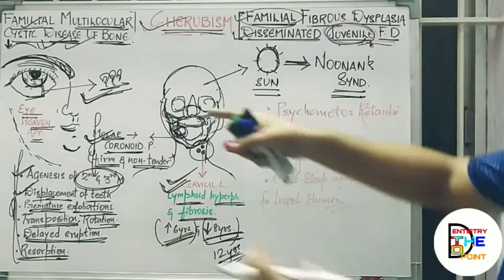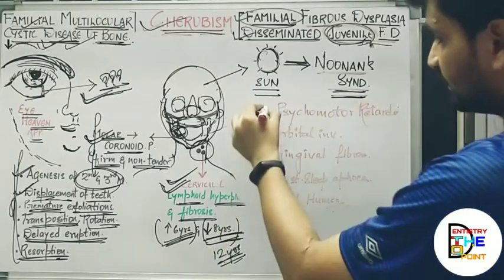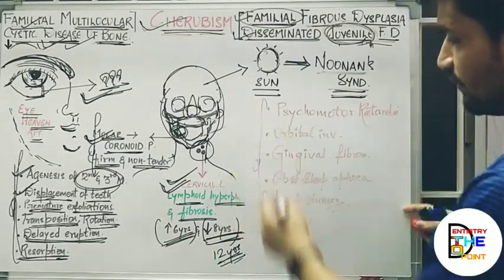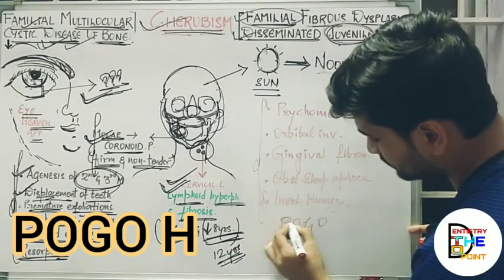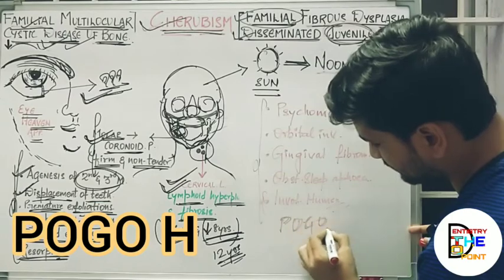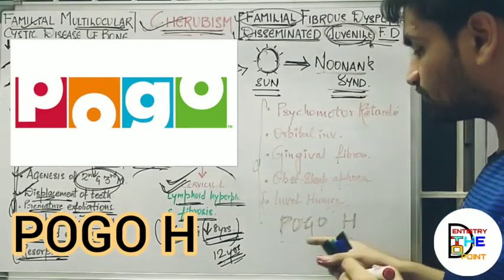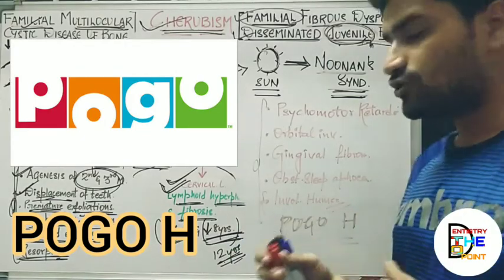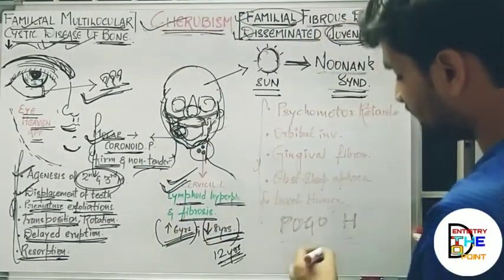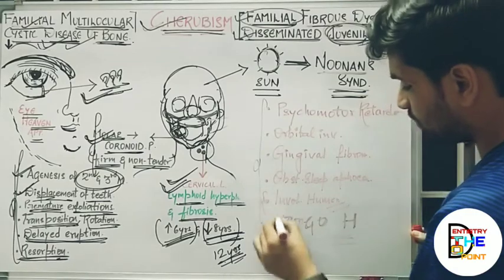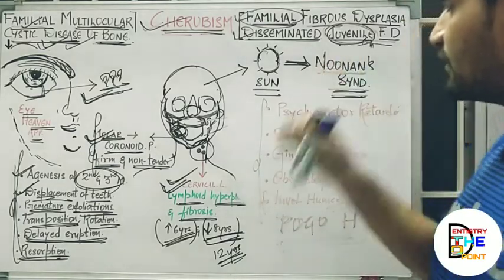The round face appearance relates to the sun, which relates to Noonan's syndrome. The mnemonic to remember the five associated conditions is POGO H — like the POGO channel watched by younger children, which also relates to cherubism affecting a younger age group. POGO H is the mnemonic for the conditions included in Noonan's syndrome.